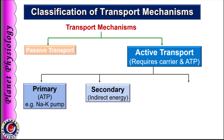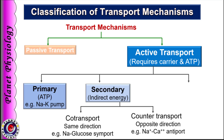If the carrier moves substances by indirect use of metabolic energy, it is termed as secondary active transport. In this case, the concentration gradient created by primary active transport is utilized to move another substance against the gradient. It can be further subdivided into co-transport and counter-transport. In co-transport, two or more substances are transported in the same direction, for example sodium and glucose transport through SGLT, that is sodium-glucose transporter. As the substances move in the same direction, co-transport is also known as symport.